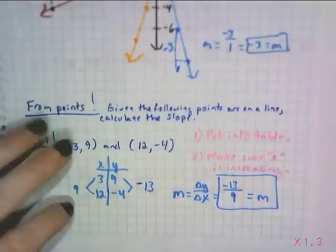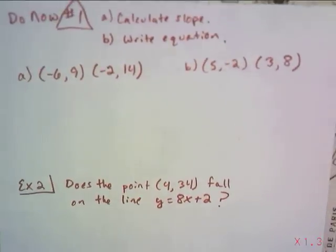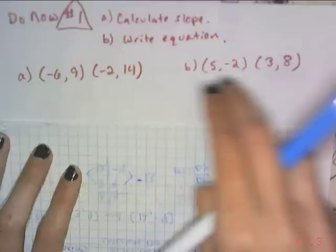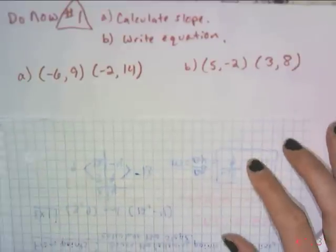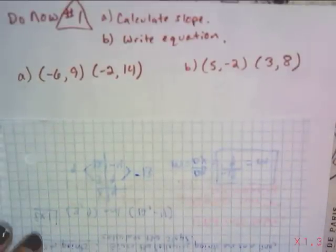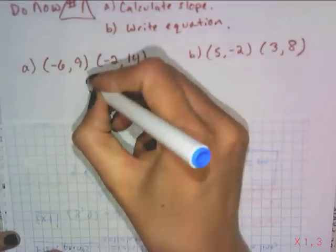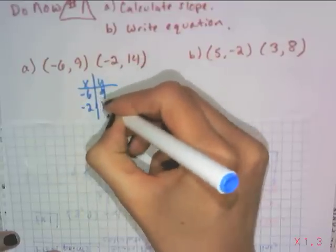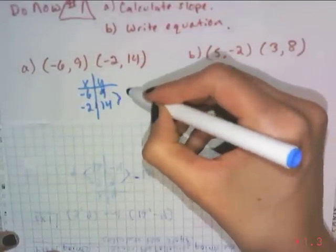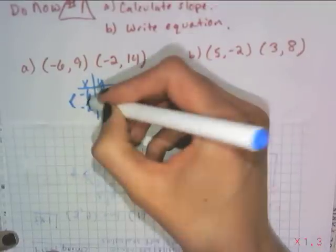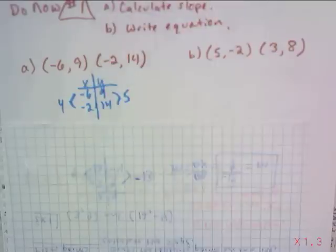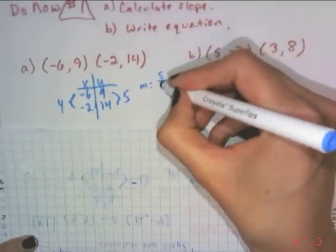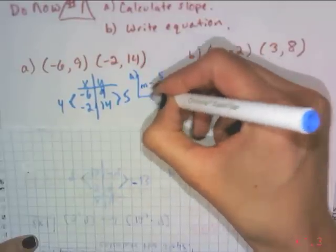So that takes us to Do Now number 1, which I would like you to try on your own. Do Now number 1 is for you to calculate the slope of these two points and these two points, and then write the equation. So once you pause it, go ahead and start it again, and we'll discuss. In the first one, you're going to put these suckers in a table, and it looks like negative 6 is bigger than negative 2. So you should arrange them like so. And you look from 9 to 14, and it looks like an increase of 5. From negative 6 to negative 2 is an increase in 4. So this means that I have a slope of 5 over 4. So that is part A.